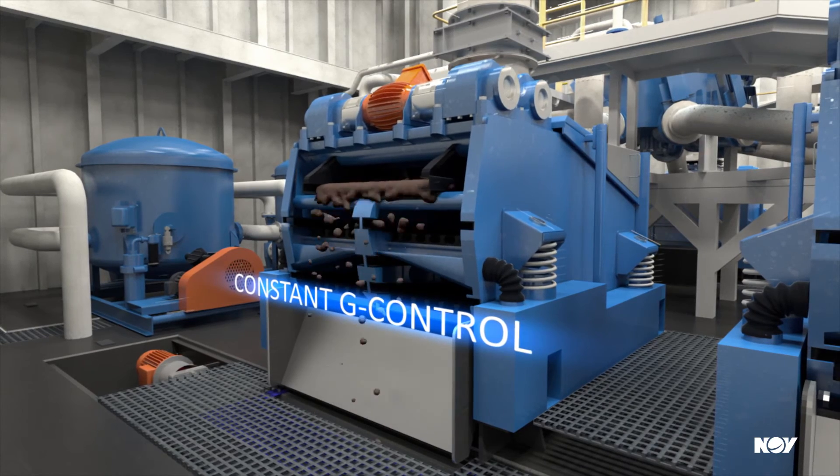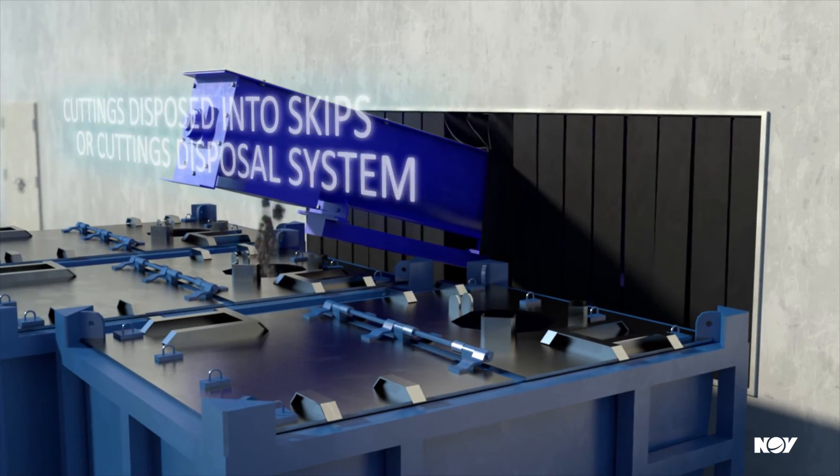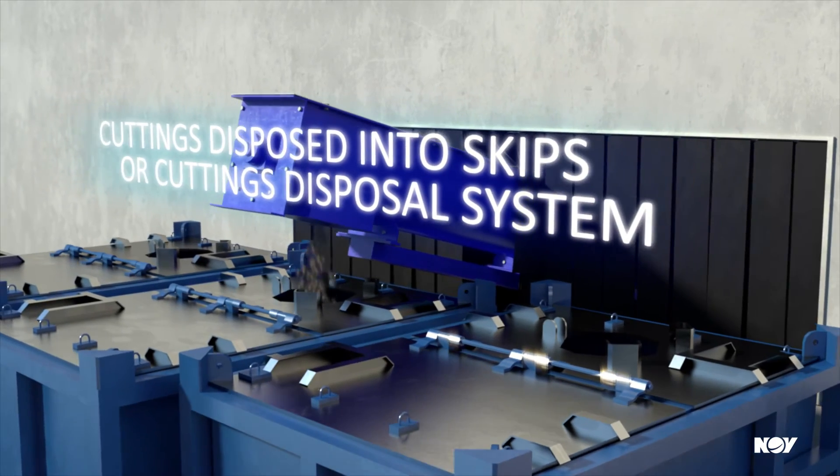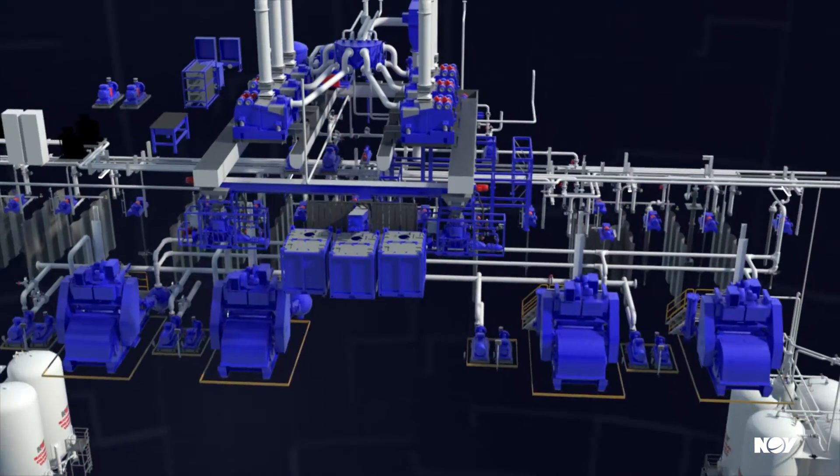After the shakers have separated the cuttings from the drilling fluid, the cuttings are transported via screw conveyors to skips or the cuttings disposal system.